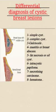Good morning everyone. Today we will have a short talk on the differential diagnosis of cystic breast lesions. It's a compact presentation. The differential diagnosis of cystic breast lesions can be one of eight entities: simple cyst, complex cyst, galactocele, mastitis or abscess, fat necrosis or oil cyst, intracystic papilloma, necrotizing carcinoma, and hematoma. These are the main categories of breast cysts.